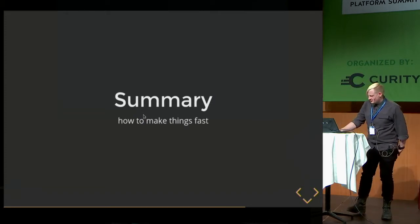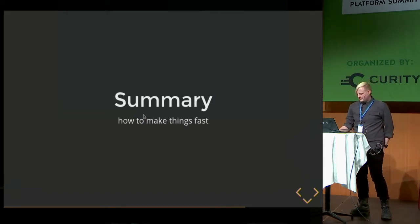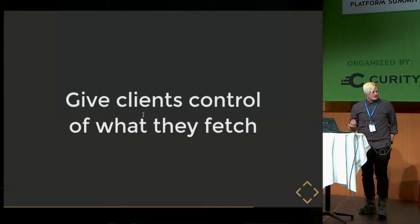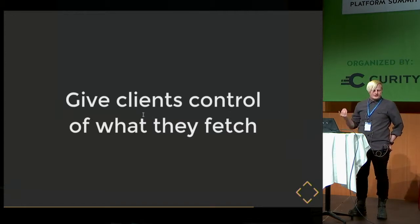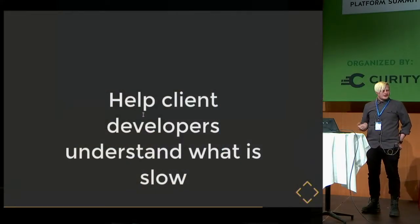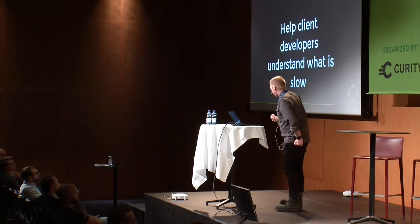Let's try to make a summary of how to make things fast when building APIs. The first step is what everybody is moving toward: GraphQL. Allow clients to have full control over what they fetch so they can ask the right questions and the backend can perform the right queries. Also help client developers understand what's slow — ideally an explain plan, but providing logs or even having a backend developer to talk to is a first step.